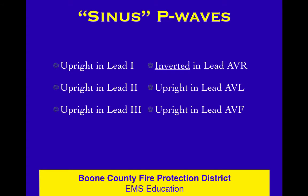A sinus P wave — a P wave that came out of the SA node — is very simply this: it is upright in leads one, two, three, AVL, and AVF, and it is supposed to be inverted in AVR. That's a sinus P wave, end of story. Write it on your arm, write it on a napkin at lunch — it's a flashcard sort of thing. This is always true.